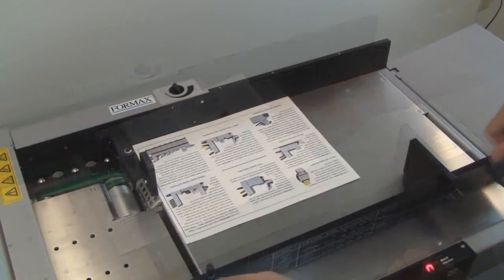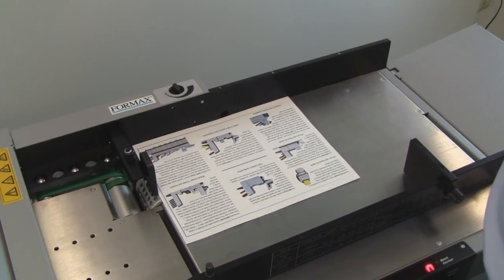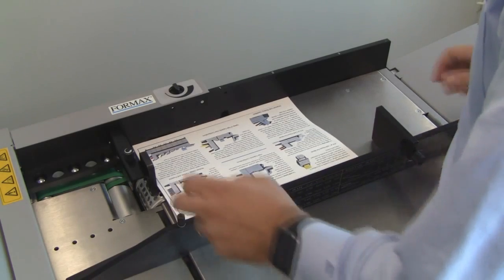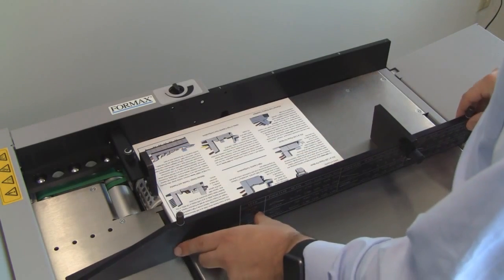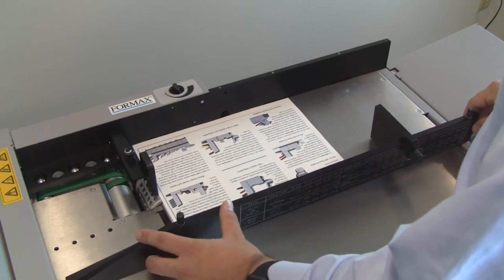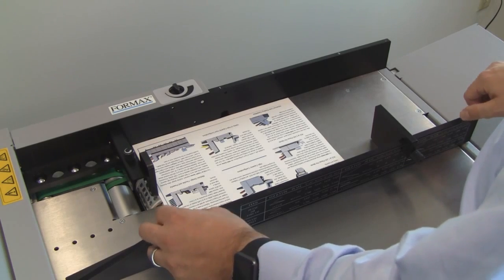Step 2: Adjust the side guides for the paper size being used. Loosen the knobs and slide the guide wall in or out, leaving about a sixteenth of an inch gap between the paper and the wall, and then tighten into position.